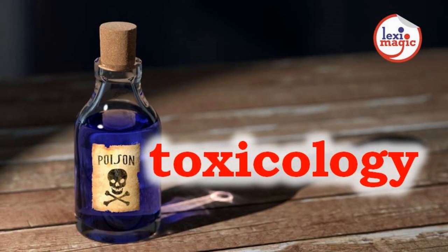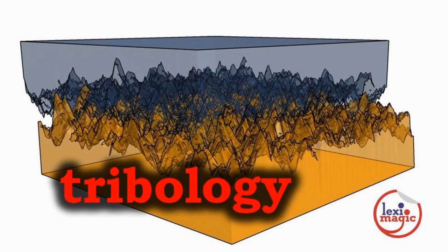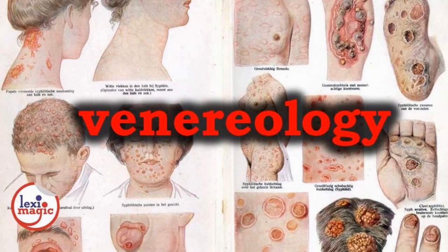Toxicology is the study of the adverse effects of toxins and poisons. Tribology is the study of friction and wear between interacting surfaces in motion. Venereology is the study of venereal and sexually transmitted diseases.